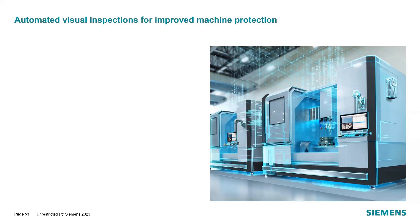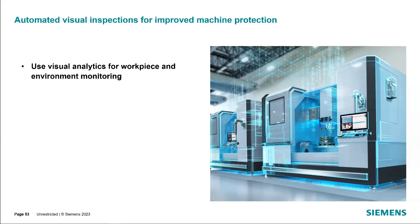We at Siemens have developed our machine vision portfolio to essentially enable workpiece and environment monitoring either in the machine itself, in the machining cell, or really can also be applied in other areas along your production line. We've designed these applications to be user-friendly in the sense that you do not have to be an expert in AI or machine learning to make use of them — easy to use, easy to implement, and easy to make improvements upon once they're deployed.